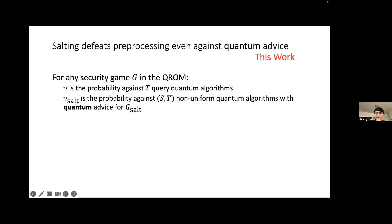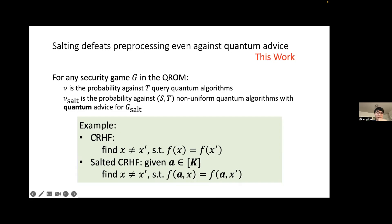Let me explain salting more. For collision-resistant hash, the regular definition asks to find two distinct inputs mapping to the same output. For salted collision-resistant hash, the adversary is given a random salt a, and the goal is to find distinct x, x' such that f(a, x) = f(a, x'). You can view f_a as a new hash function under this random salt, and the goal is to find a collision under this new hash function.